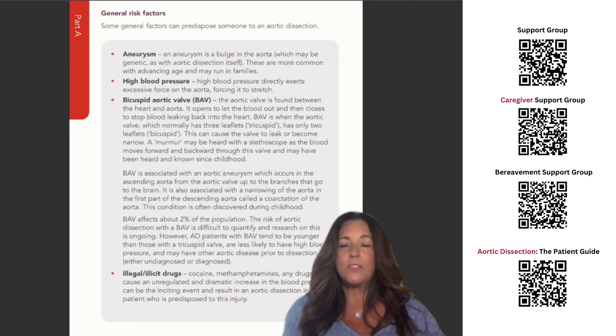Illegal illicit drugs. Cocaine, methamphetamines, any drugs that cause an unregulated and dramatic increase in the blood pressure can be the inciting event and result in an aortic dissection in a patient who is predisposed to this injury.